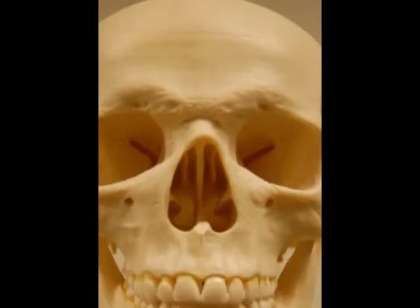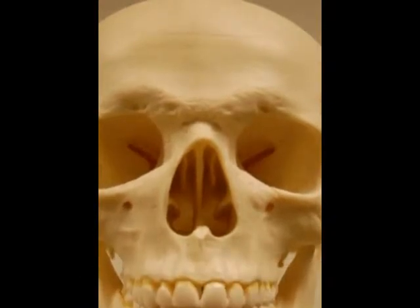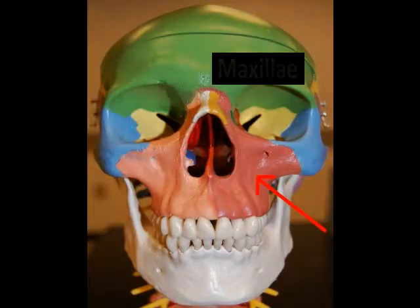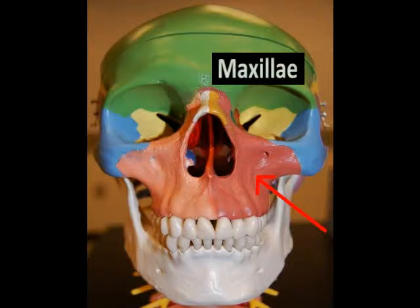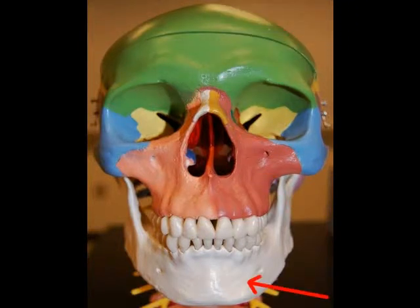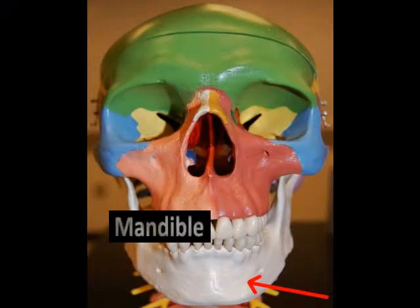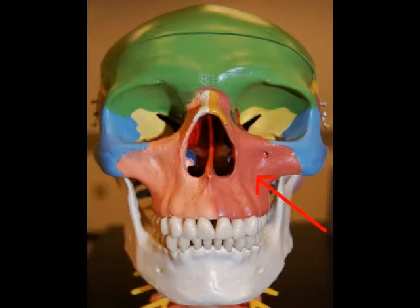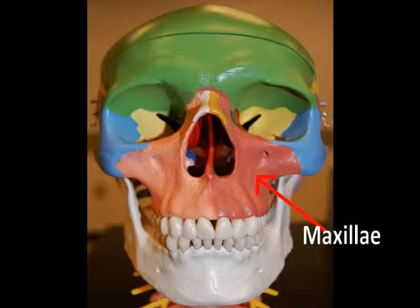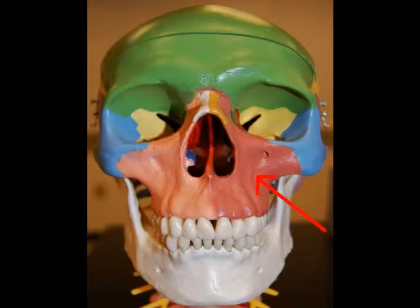Our focus here in part two is on the jaw, and specifically the maxilla and mandible. The maxilla are a pair of bones that form the upper jawbone, and they fuse together around weeks 10 to 12 during embryonic development.